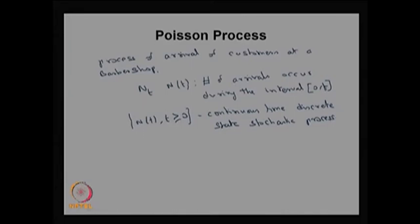So N(t) for t ≥ 0 is a continuous time discrete state stochastic process. Now we are going to develop the theory behind the Poisson process. To create the Poisson process, you need a few assumptions so that you can develop it.